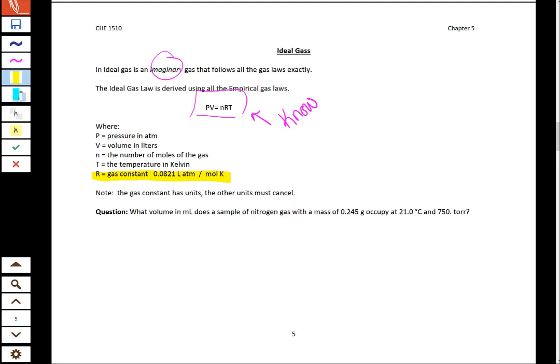When we look at a typical ideal gas law equation or calculation, the thing that we need to make sure of is that whatever ideal gas constant we're using dictates the units. We need to have the units here for pressure, volume, moles, and temperature to cancel with the units given in our ideal gas constant. So again, P is pressure, V is volume, N is moles, R is a constant that will be given, and T is temperature.